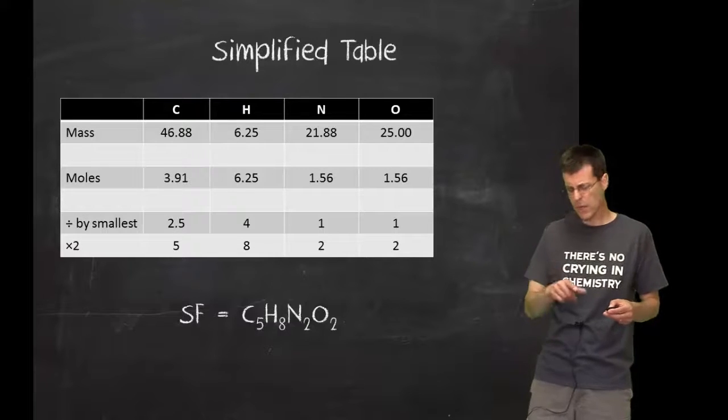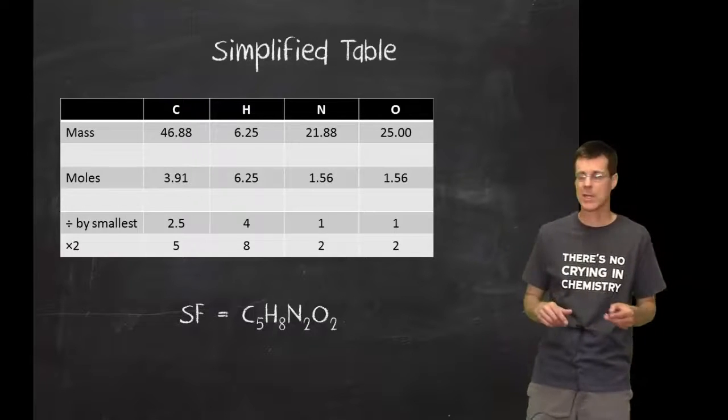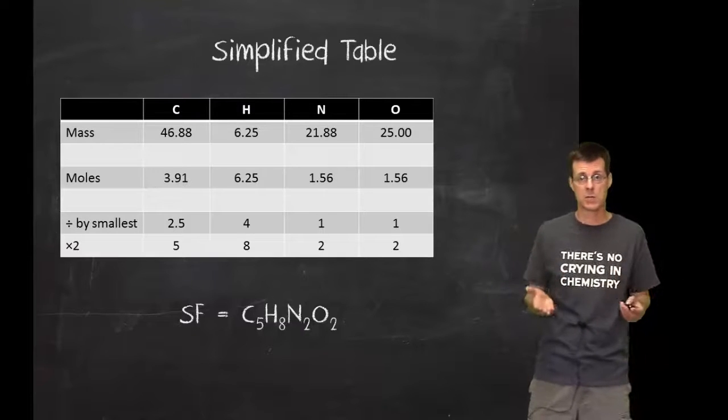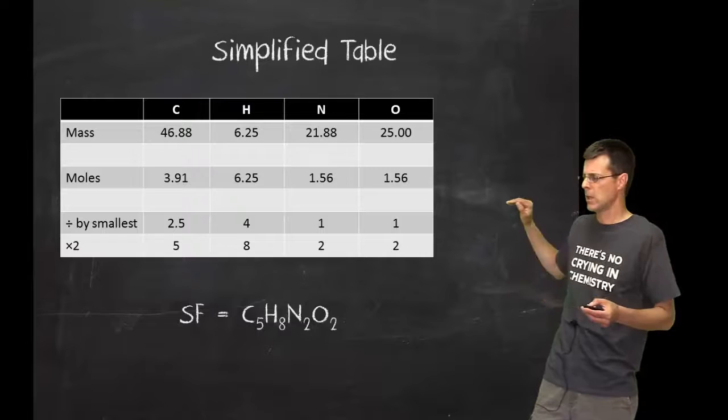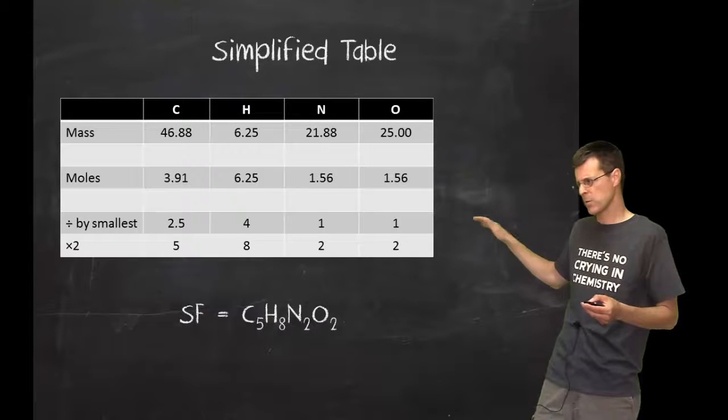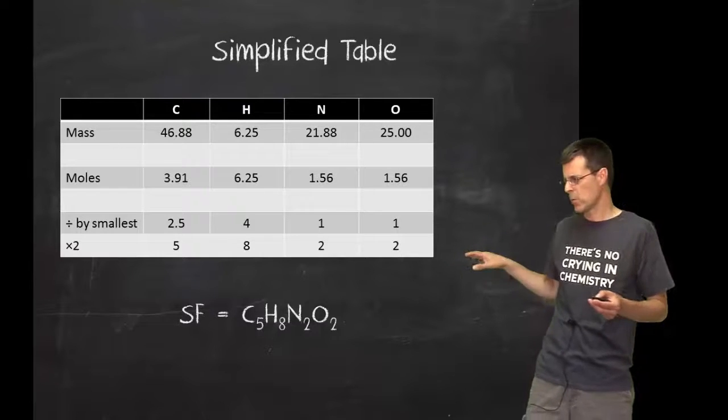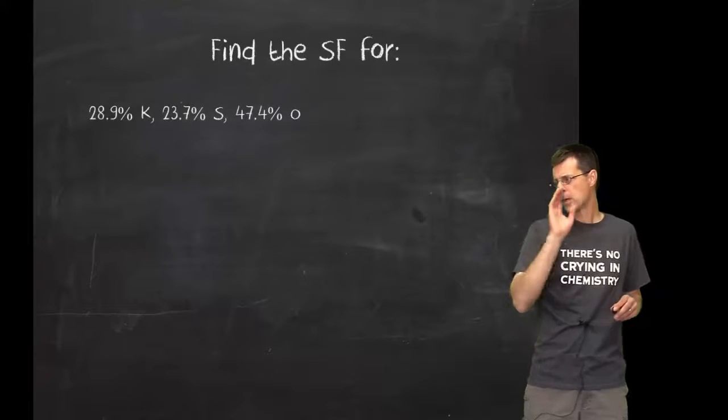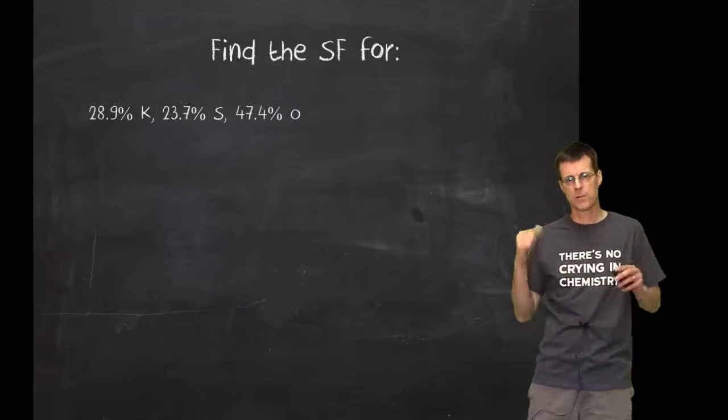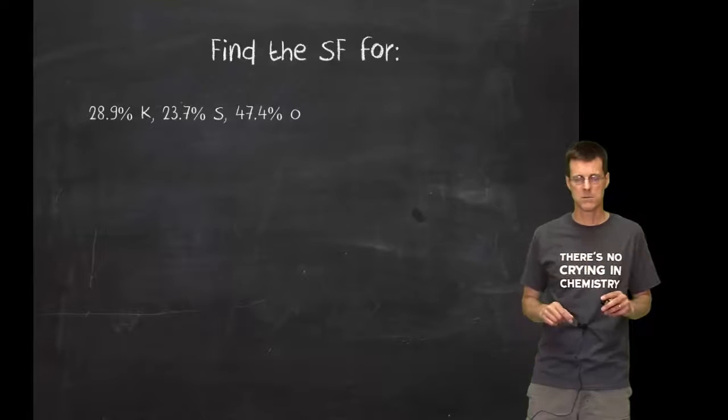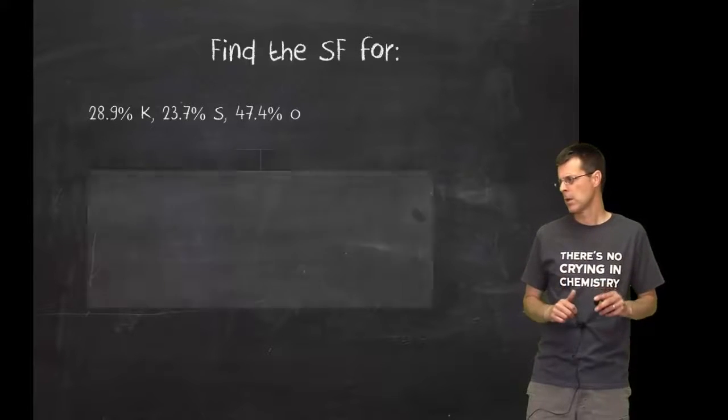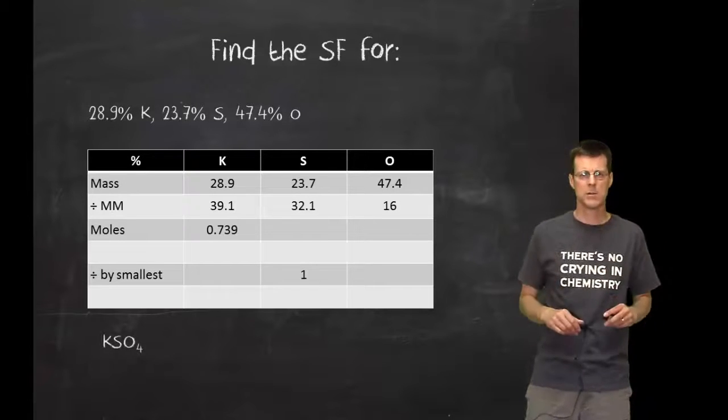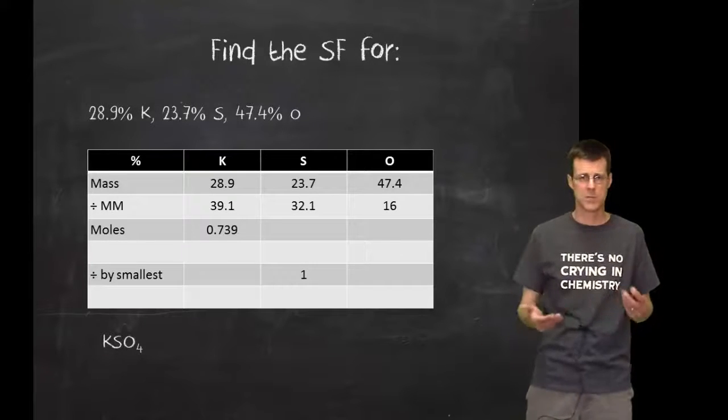I'm going to show you the simplified table. This is the kind of table that I would expect to see on most of your answers. Nice and neat, nice and clear. I'm not writing down what I divided by to get the numbers of moles, I'm not writing down what I divided by when I divided by the smallest, I'm just writing down what I got. Too easy. I'm going to give you this one to try. You want to pause it and do this for yourself. Hopefully you did. Here's a partial table of what you got, and then here is the final answer of what that simplest formula will be.